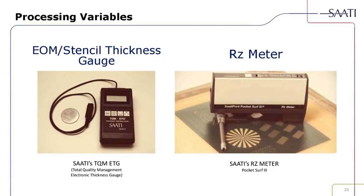Two devices we use regularly to audit the screen room for stencil thickness are the EOM meter and the RZ meter. These tools aren't widely used, but we like to use them to help printers and customers acknowledge where they are and where improvements can be made.